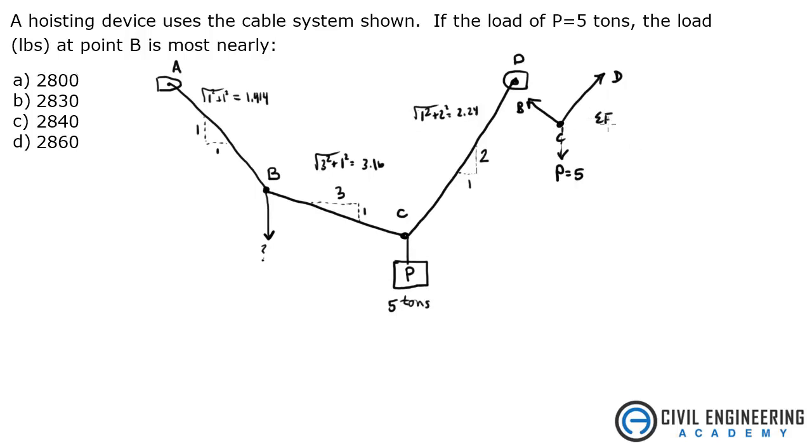So let's go ahead and take some of the forces in the x direction, and that's going to give me force of CD times 1, that's the x component over the hypotenuse, 2.24, minus force of BC times 3 over 3.16, and that equals 0. So 3 is the x component over 3.16.